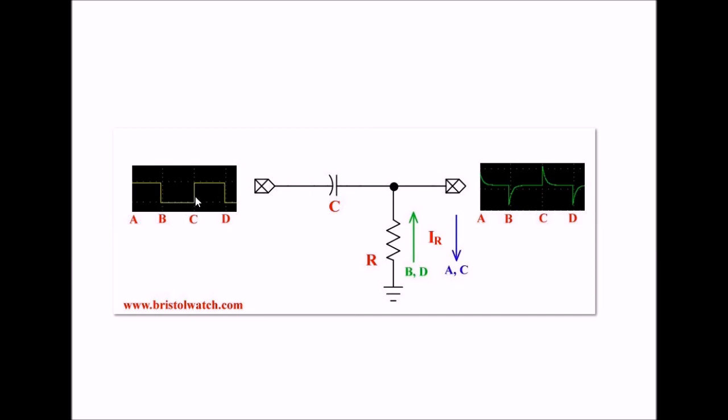Basically, when the square wave goes high, I get a rush of current. See the blue arrow here that comes through the resistor, giving me this positive going spike. When the square wave goes back to zero, the capacitor begins to discharge back through the gate that powered it. And the current moves in the opposite direction, giving me a negative going pulse. We can use this circuit to do some interesting things with a couple of gates.